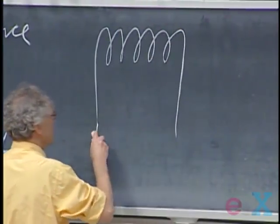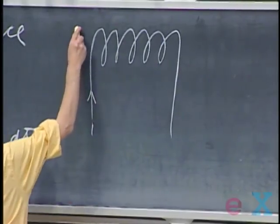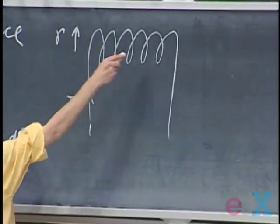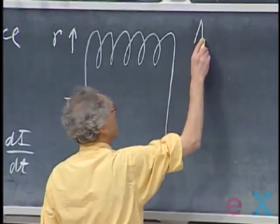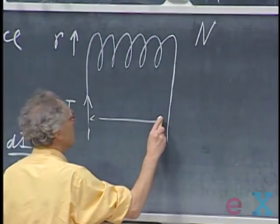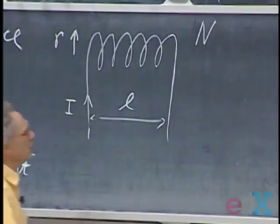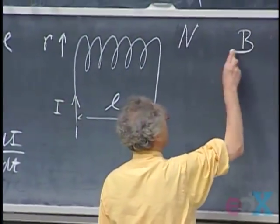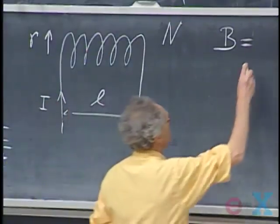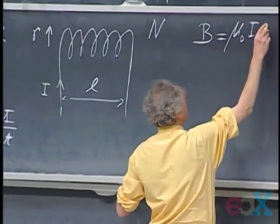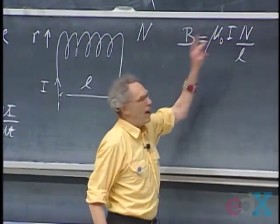Let this be a solenoid — a closed circuit. We run a current I through the solenoid. The radius of these windings is little r. There are N windings and the length of the solenoid is little l. Using Ampere's law, we derived earlier that the magnetic field inside the solenoid is μ₀ times I times capital N divided by l. This is the number of windings per meter.